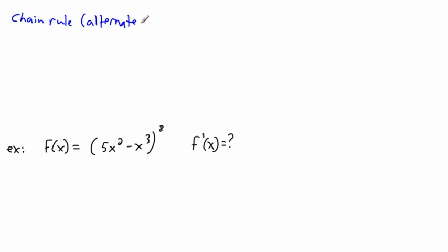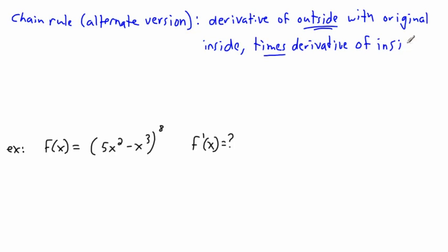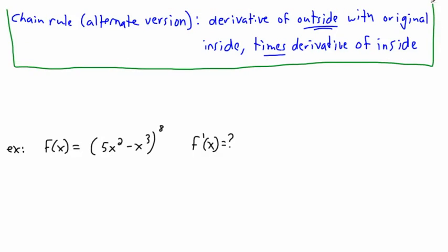Here's an alternate, more verbal version of chain rule. If you have an inside function and an outside function, then the derivative equals: the derivative of the outside with the original inside kept in place, times the derivative of the inside. This isn't as mathematical, but it does exactly the same thing as the written-out version.